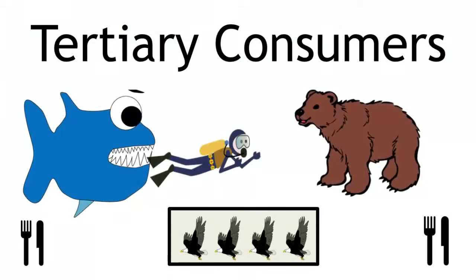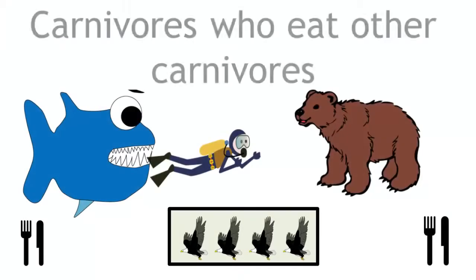Secondary consumers are followed by tertiary consumers. Level 4 is carnivores who eat other carnivores.